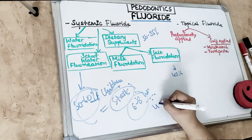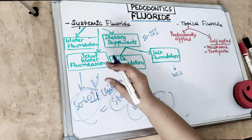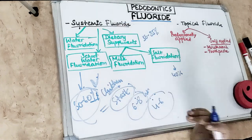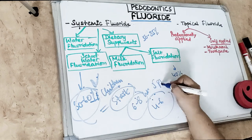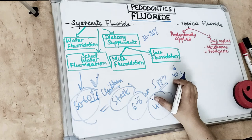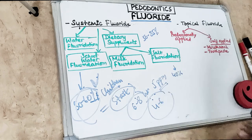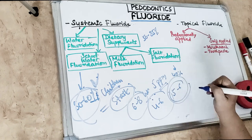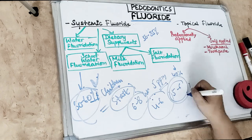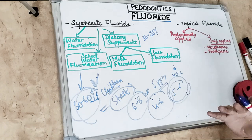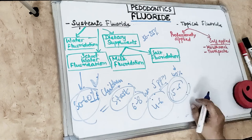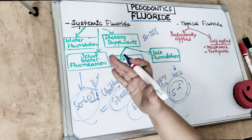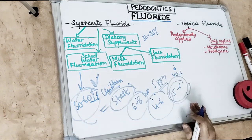Since children spend only six to eight hours per day in school, the concentration of fluoride in school water fluoridation is four to six times more than regular water fluoridation — approximately 5 ppm — to offset the less frequent intake. A disadvantage is that most children are five to six years old when they start school, so pre-eruptive contact with primary teeth is not achieved. Also, schools operate fewer than 180 days per year, so children don't receive the complete effect.